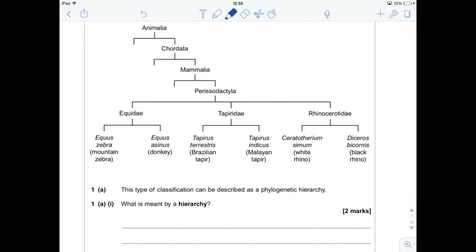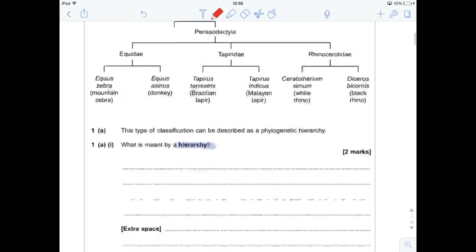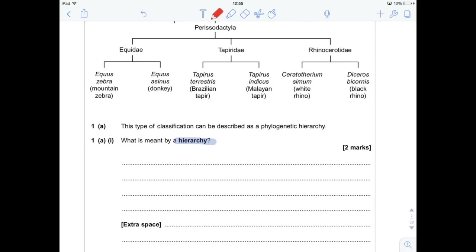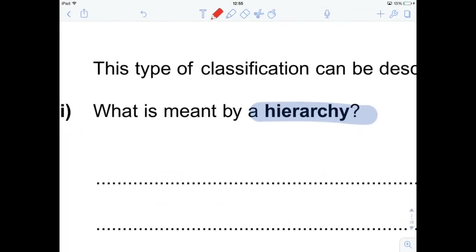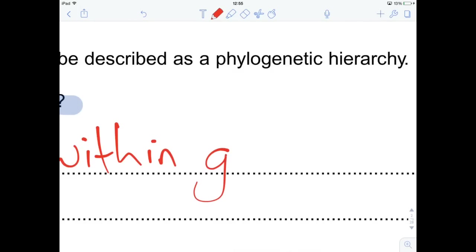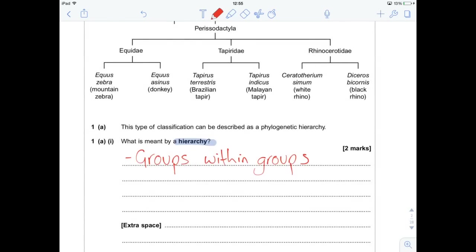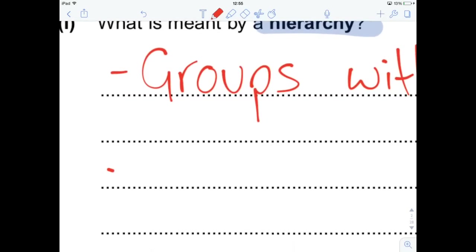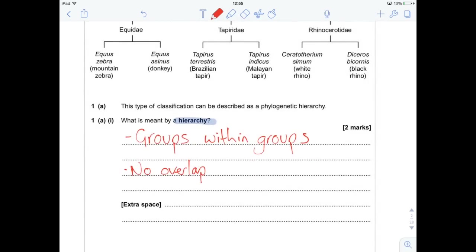what is a hierarchy? This is something that pops up year after year, and it's something that you should be able to just regurgitate. So the idea is there are groups occurring within groups, and absolutely crucially, there is no overlap between these groups. So that means that one species cannot occur in more than one place. So no overlap. And you can do this in bullet points, you can do this as succinctly as you like, but they're five words, two marks, groups within groups, no overlap.